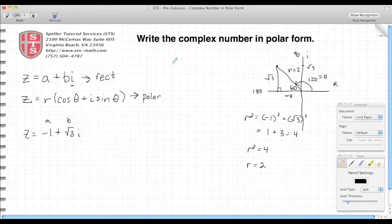So now we have what r is and we have what theta is, and we're going to substitute both of those into this second equation. So we have z equals 2 times the cosine of 120 degrees plus i sine of 120 degrees. And you can leave it in this form, but most of the time your teacher or instructor will want this in radian measure.